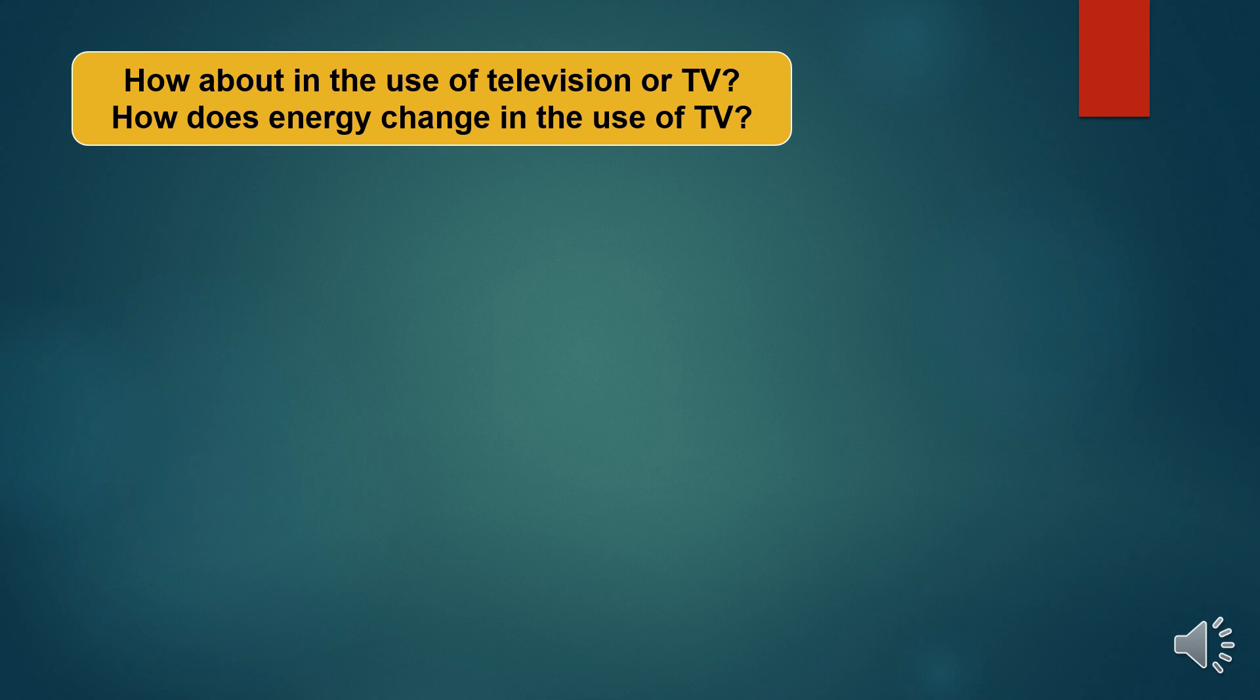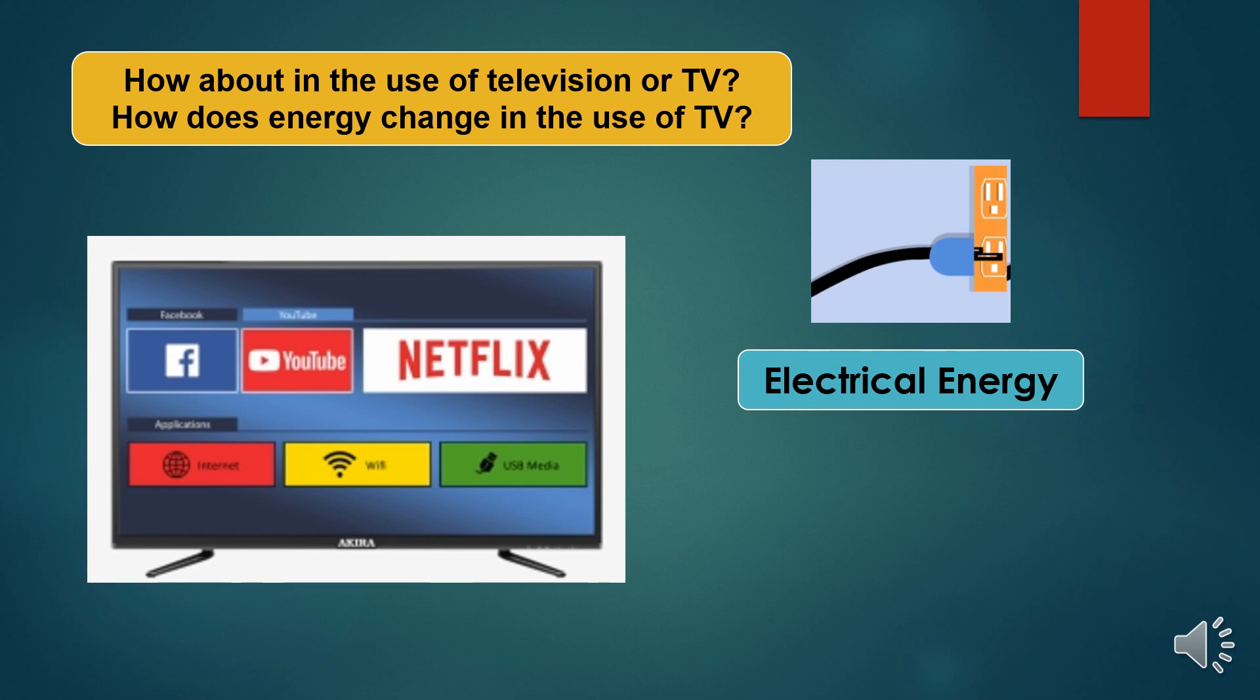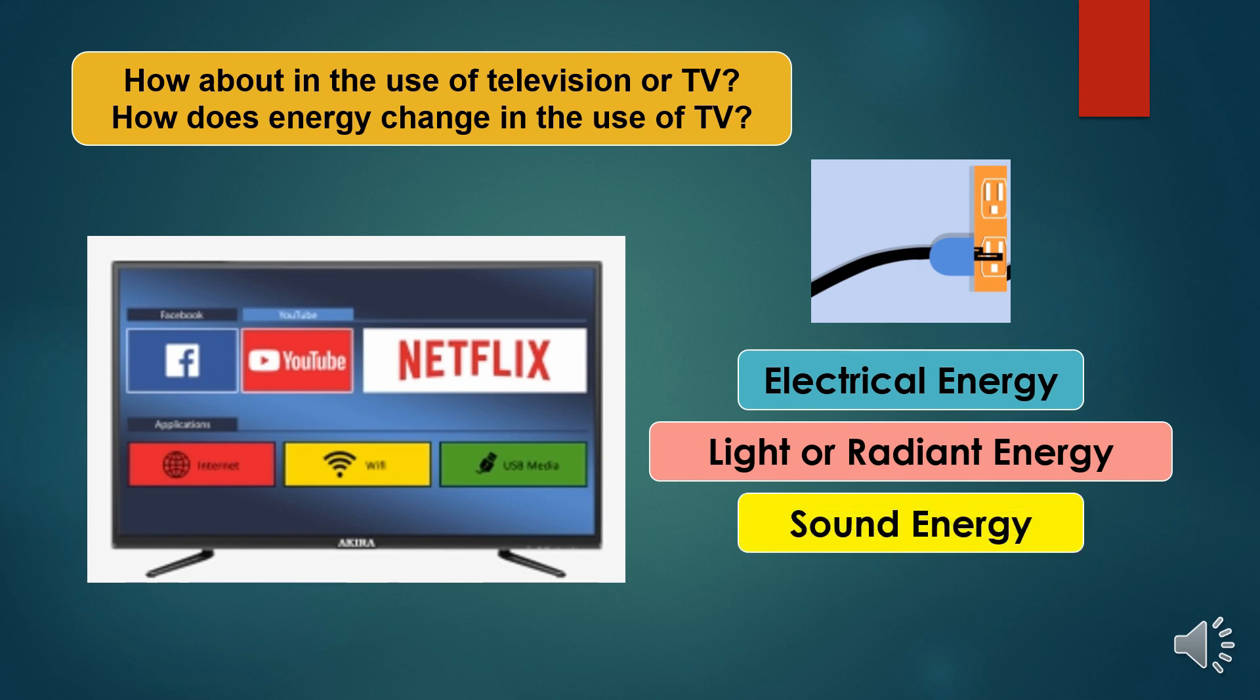How about in the use of television or TV? How does energy change in the use of TV? First, we have to plug it. We use electrical energy to turn on the television. When we already watch, what energy forms are produced? Correct. Light or radiant energy is produced as we watch TV. What other energy form is present? You're right. Sound energy is also present as we listen to the TV show. Are there other forms that is present when you have watched for more than an hour? Yes. Heat or thermal energy is also present. In that situation, electrical energy was transformed to other forms when we watch on TV.